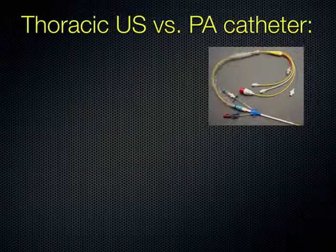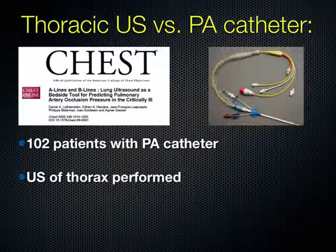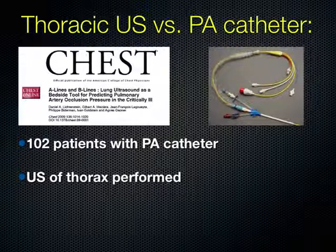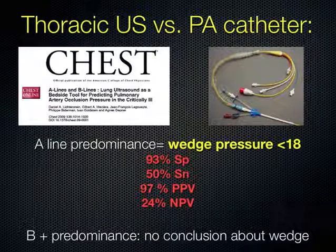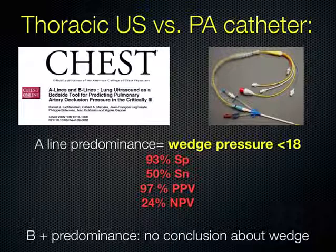Regarding the utility of PA catheters compared to ultrasound for understanding causes of respiratory failure: a CHESS article looked at A lines and B lines to see what they could tell us about pulmonary capillary wedge pressure. In 102 patients who had a PA catheter, all had a thoracic ultrasound performed. The findings were that A line predominance meant the wedge pressure was always less than 18. However, B line predominance did not allow a conclusion about the wedge, because cardiogenic and non-cardiogenic pulmonary edema can often appear similar.